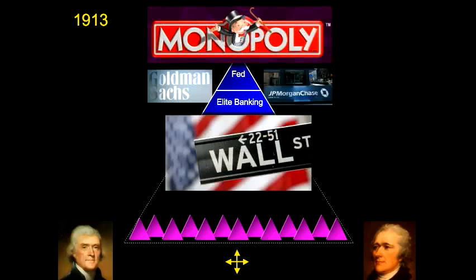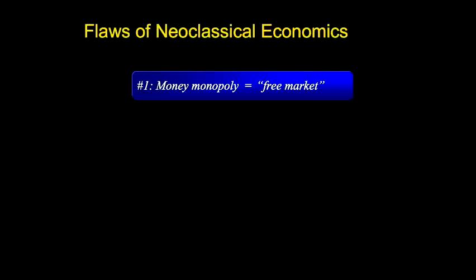Wall Street is shown here with the requisite American flag behind it, because Wall Street loves to associate itself with the idea of American freedom. But Americans are generally opposed to cartels and monopolies because, by definition, they violate the free market and they have nothing to do with freedom. For example, we don't like OPEC, but we seem to have no problem with the Wall Street cartel. This brings us to the first key flaw of neoclassical economics, which has really become a religion. It calls our system under a privately controlled monopoly a free market. Not even close.